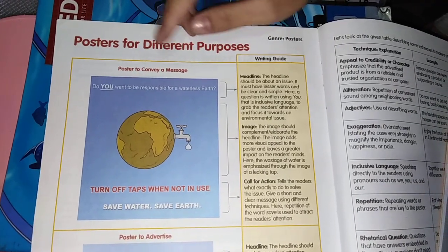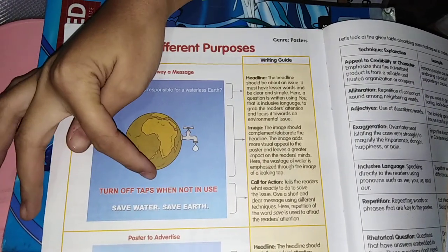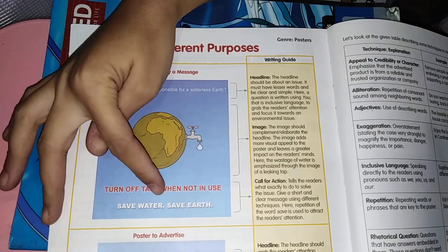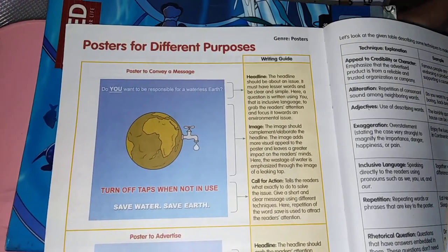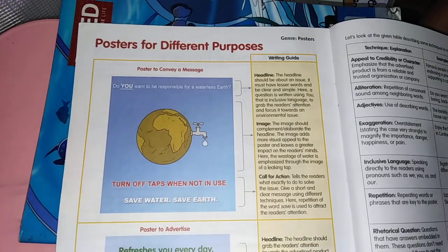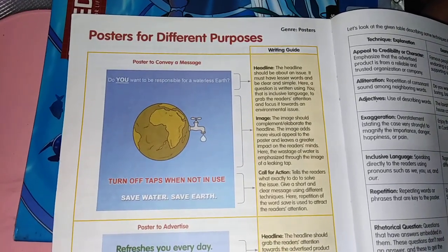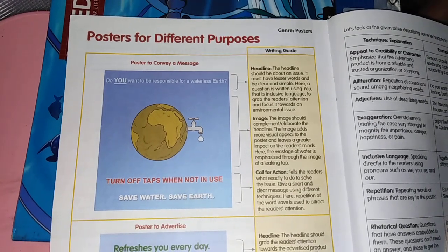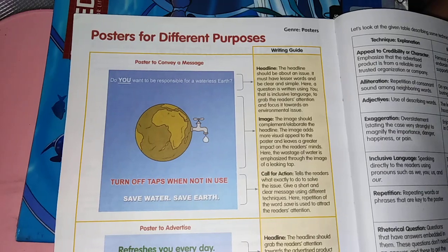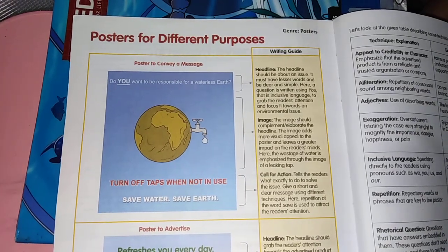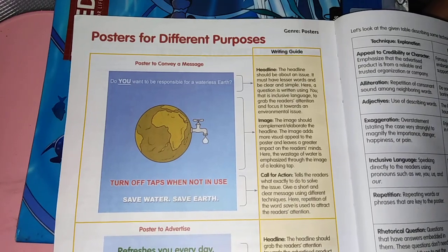We also have a call for action. 'Turn off taps when not in use, save water, save earth.' These are what we call call for action. It tells the readers what exactly to do to solve the issue. It also gives a short and clear message using different techniques. There is also a repetition of the word 'save' used to attract the reader's attention.